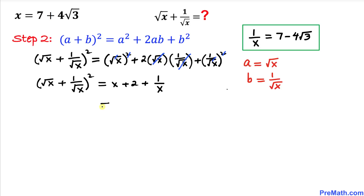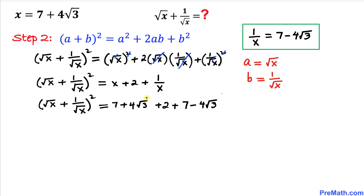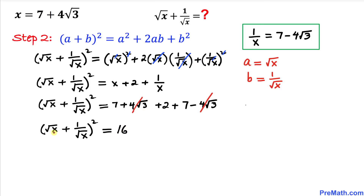So on the right-hand side, substituting gives us (7 plus 4 times square root of 3) plus 2 plus (7 minus 4 times square root of 3). The 4 times square root of 3 and negative 4 times square root of 3 cancel out. The right-hand side becomes 7 plus 2 plus 7, which gives us 16. So (square root of x plus 1 divided by square root of x)² equals 16.